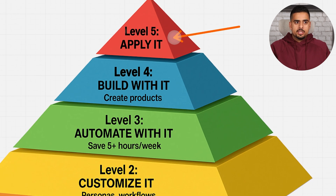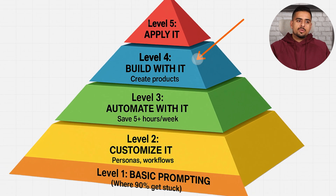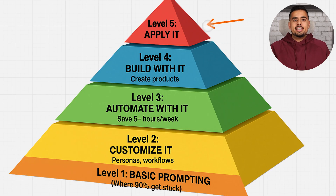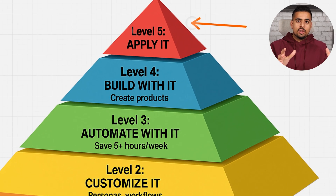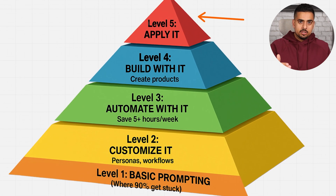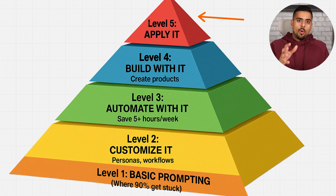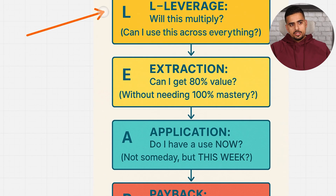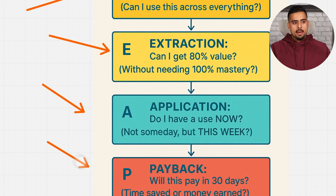The end goal is to apply it, but to apply it you have to go through these stages — learn the thing, make it your own, automate with it if applicable, then build with it for yourself, others, or external customers. This gives you tacit knowledge — knowledge you can only acquire by doing the thing and having experiential learning. If you want to get more tactical, steal my LEAP decision matrix. LEAP stands for leverage, extraction, application, and payback.